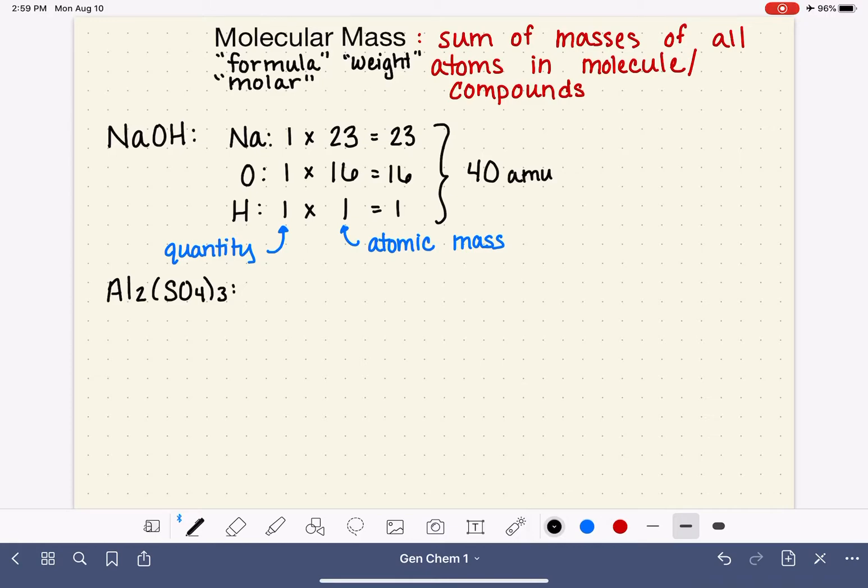We also learned that these numbers represent the weight of one mole of that substance in grams. So these are also in units of grams per mole, which means that this sum could also be grams per mole. Either one of those units is acceptable. So the molecular mass of sodium hydroxide is 40 AMUs or 40 grams per mole.